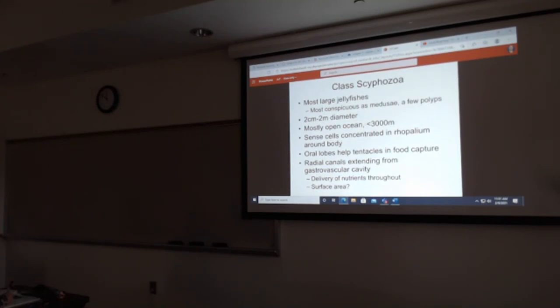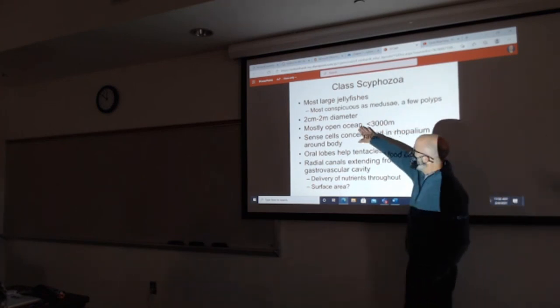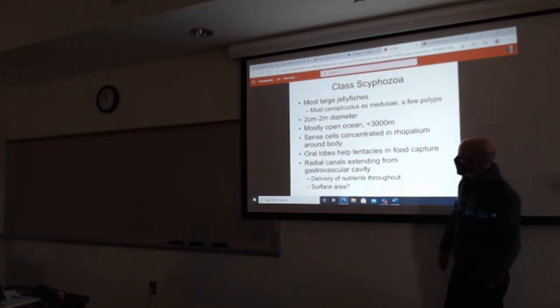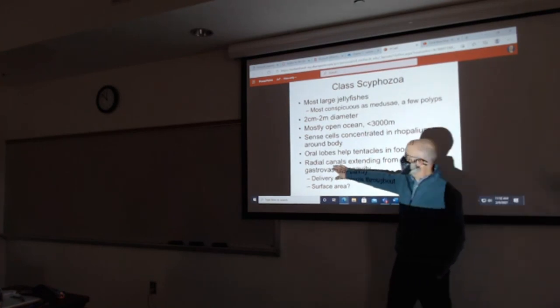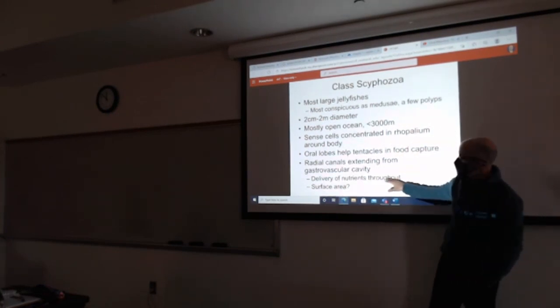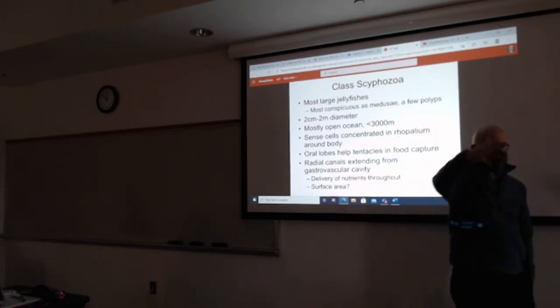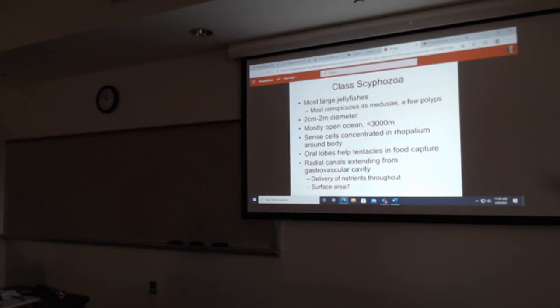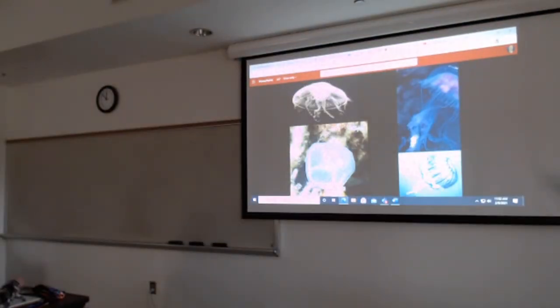Class Scyphozoa. This is largely the big jellyfishes. Mostly the medusa form up to two meters in diameter. Habitat mostly in open ocean up to 3,000 meters. The gastrovascular cavity does the digestion. The nutrients probably disperse through these radial canals and go to the individual cells. So the jellyfish is mostly a giant scoop.